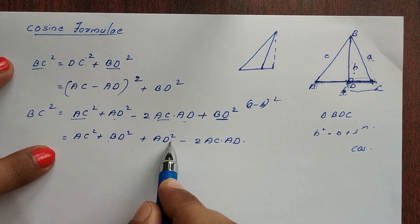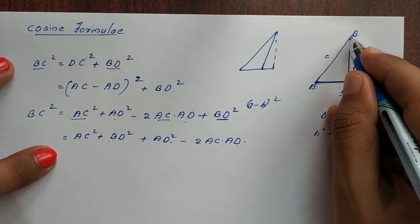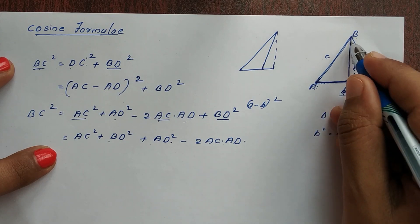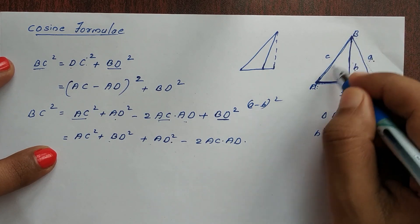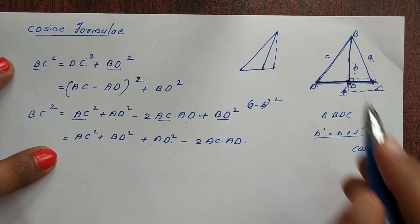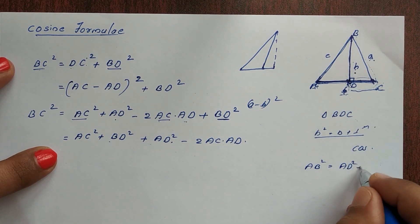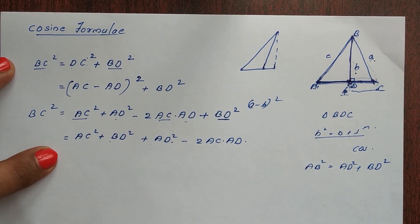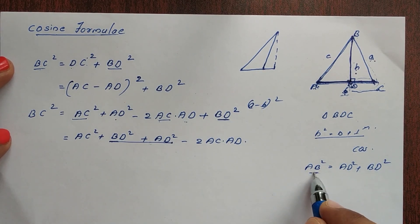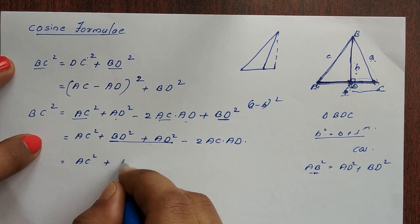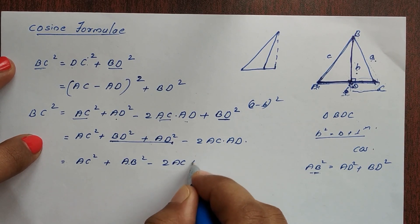Consider triangle ADB — this is also a right-angle triangle. So AB² = AD² + BD². Therefore BD² + AD² = AB². Substituting, we get a² = AB² − 2·AC·AD, which is a² = b² + c² − 2·AC·AD... wait, that is a² = b² + c² − 2·AC·AD.